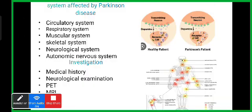There are six main systems affected by Parkinson's disease: the circulatory system, respiratory system, muscular system, skeletal system, neurological system, and autonomic nervous system. The autonomic nervous system involvement may lead to sudden decline in blood pressure upon standing or sitting. Respiratory muscle strength and lung function parameters are impaired from the early stages, with bradykinesia and rigidity correlating most strongly with these impairments.